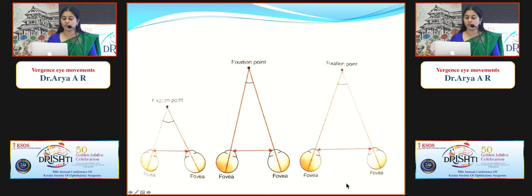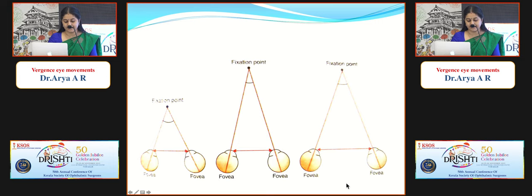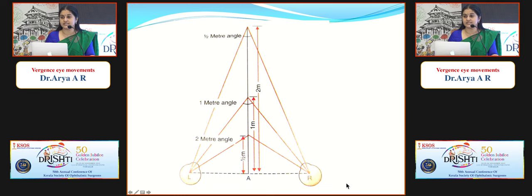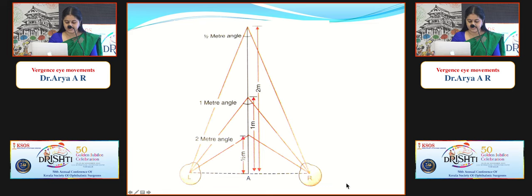Convergence is a disjugate movement in which both eyes rotate inward so that lines of sight intersect in front of the eyes, allowing bifoveal single vision to be maintained at a fixated distance. Convergence remains relatively stable throughout life and does not deteriorate like accommodation; it can be increased by exercises. The angle of convergence is the angle formed between the primary lines of sight during convergence. One meter angle of convergence is exerted by each eye when directed to an object at one meter from the midline between the two eyes.